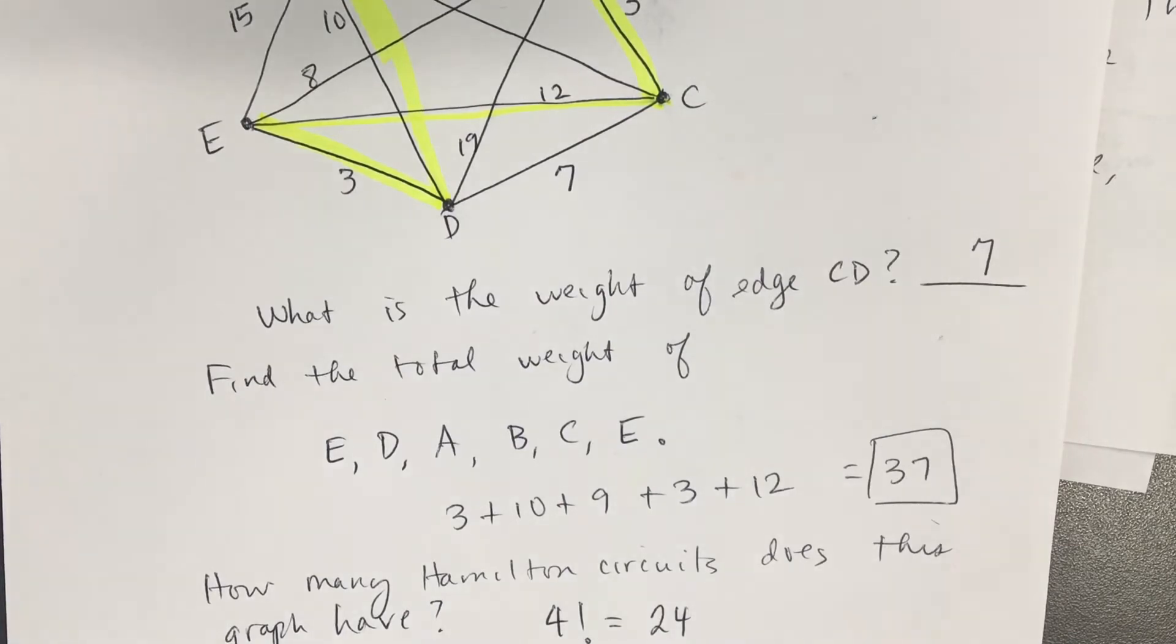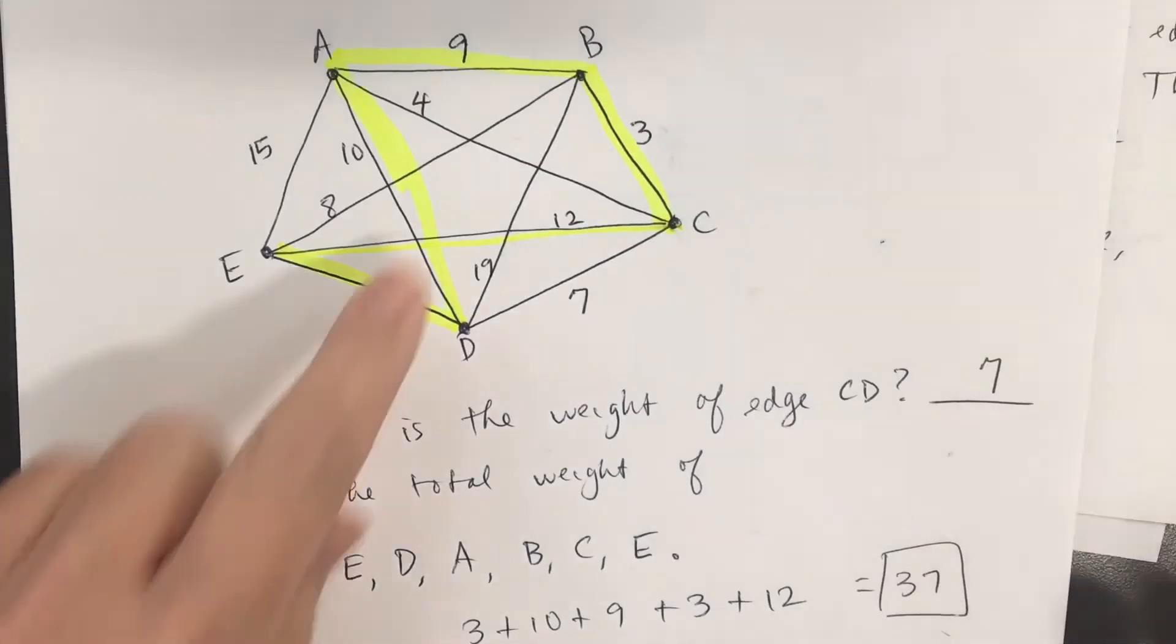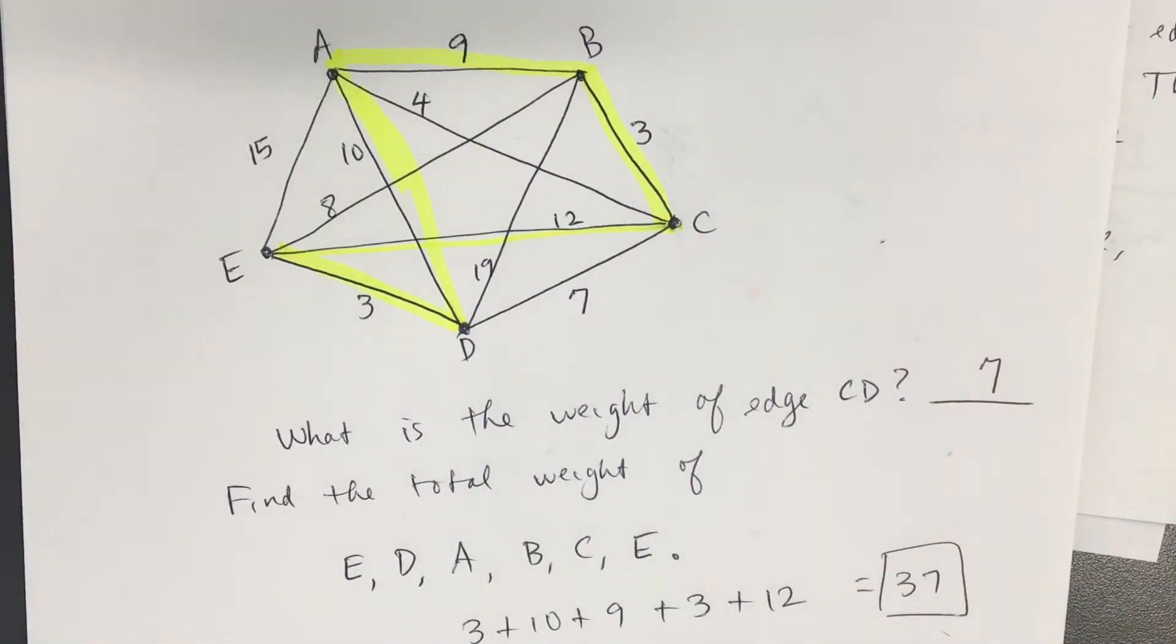If I'm wanting to run errands around town, I'm thinking this might represent distances. I want to run these errands around town. I might like the shortest route.